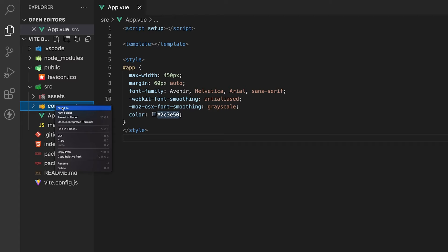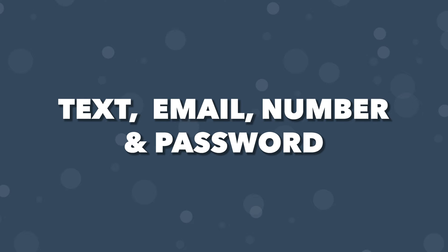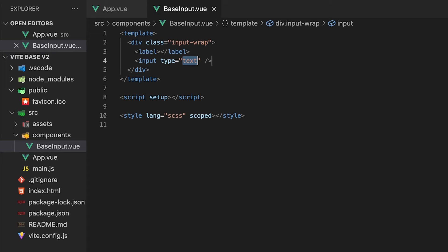To begin, let's first create a new component called BaseInput.vue. We'll be able to use this component for various input types such as text, email, number, and password. Within our component, let's create some markup for our input. We'll keep this simple by just having a label and an input itself.